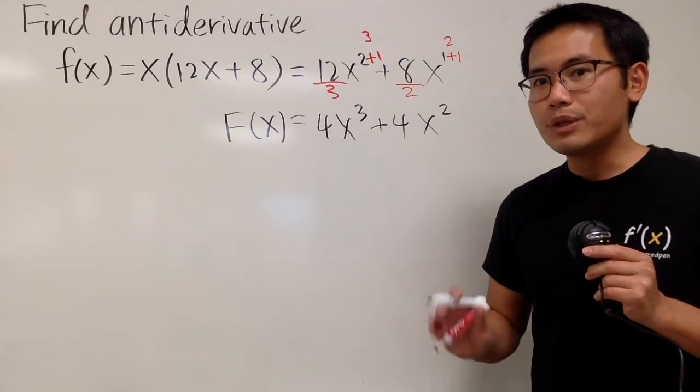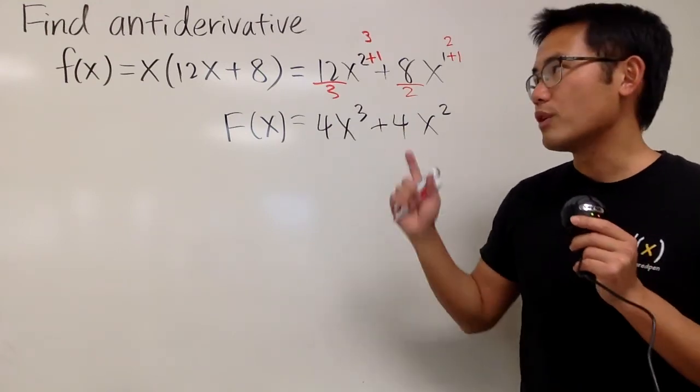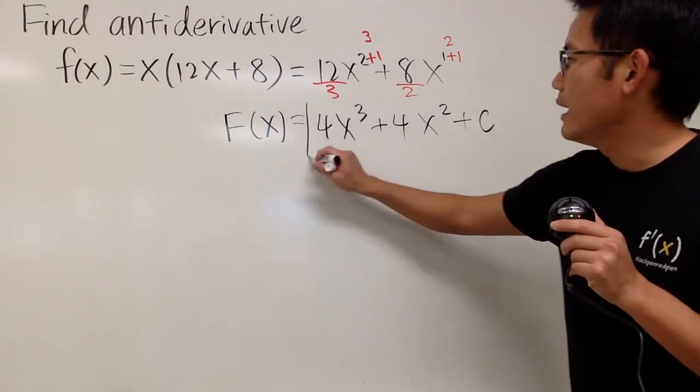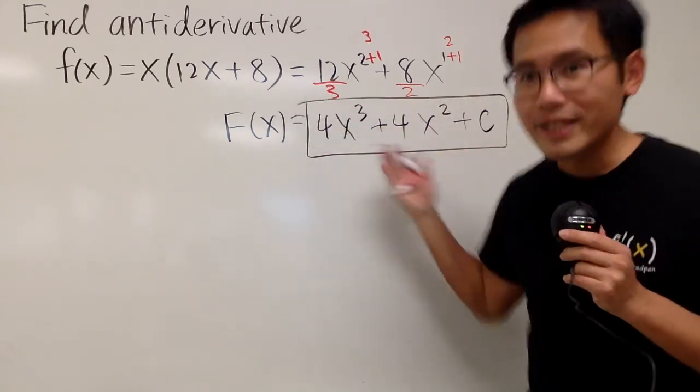So, this is how we do the reverse power rule, and because we're finding the antiderivative, in the end, don't forget, the plus c. And we're done.